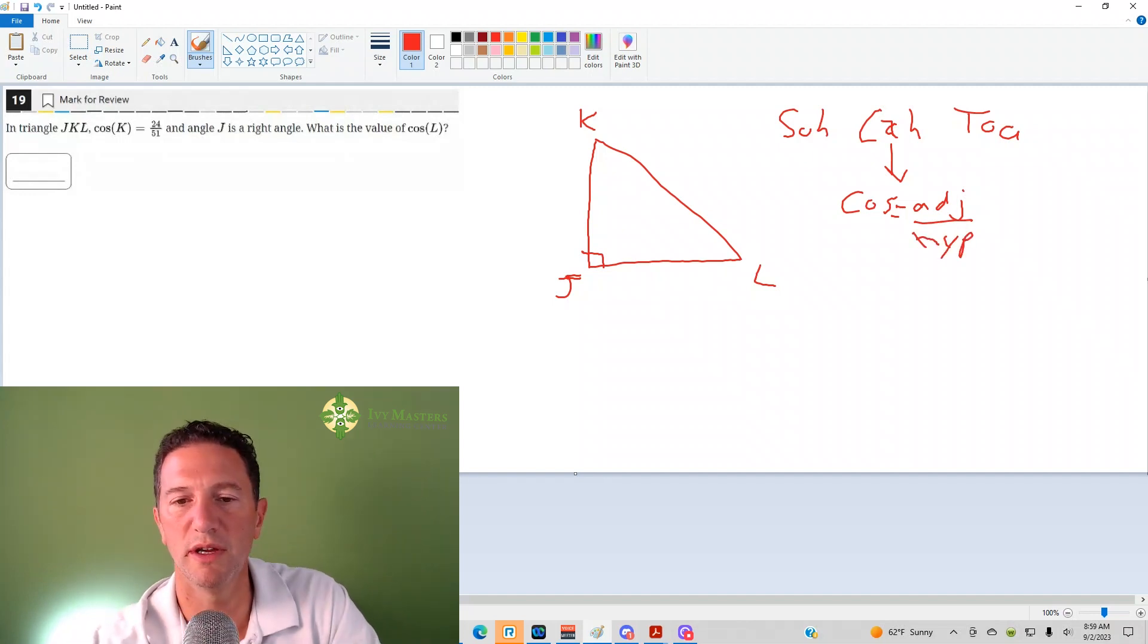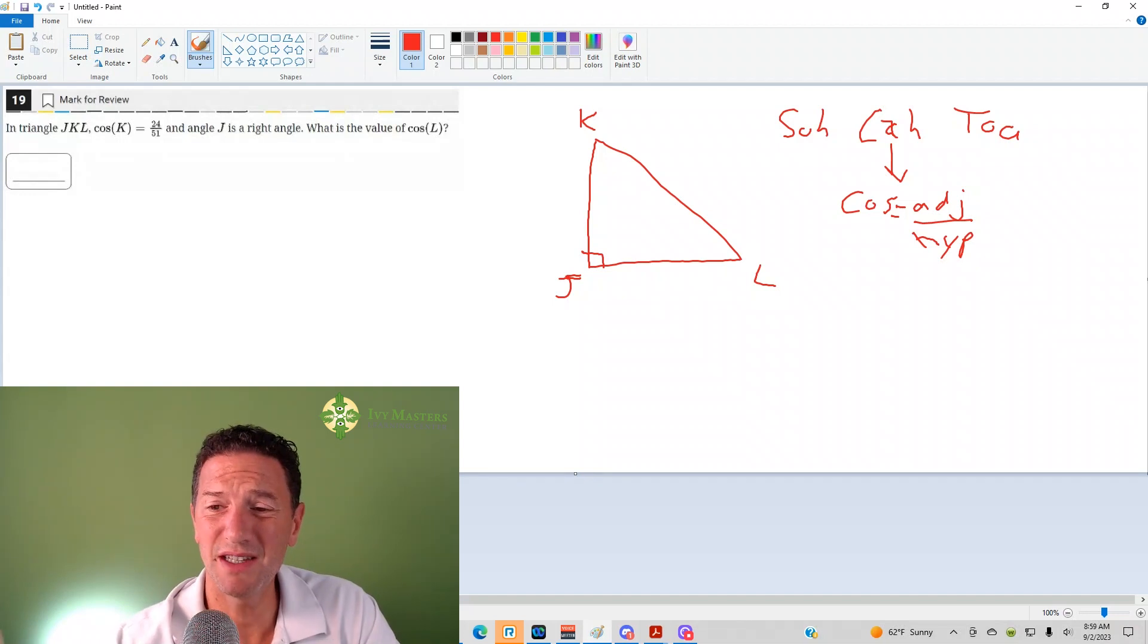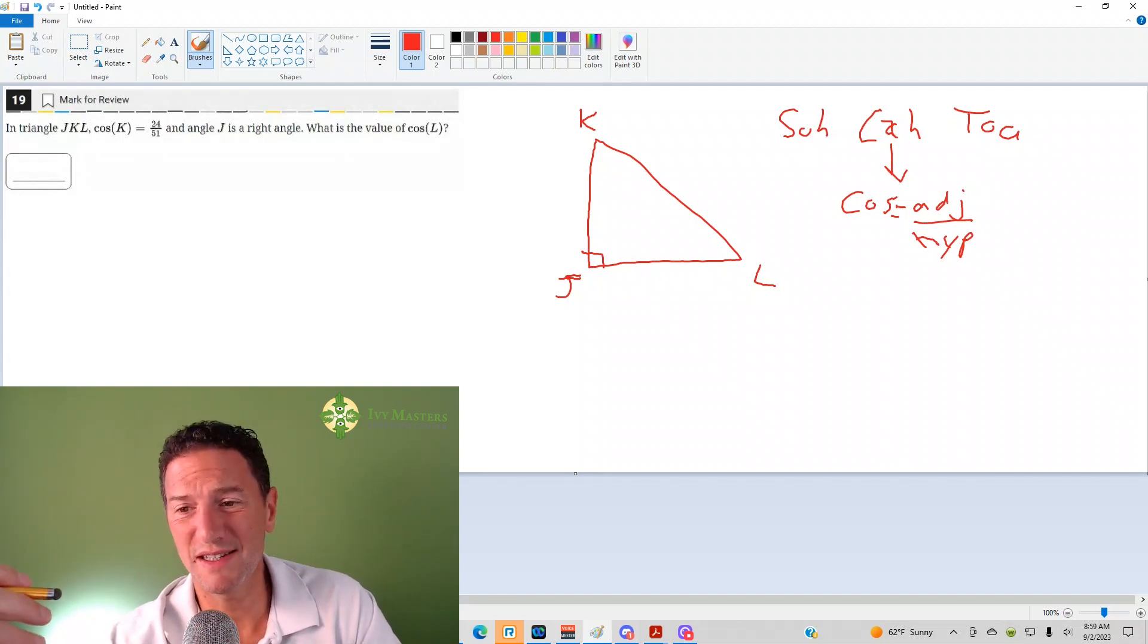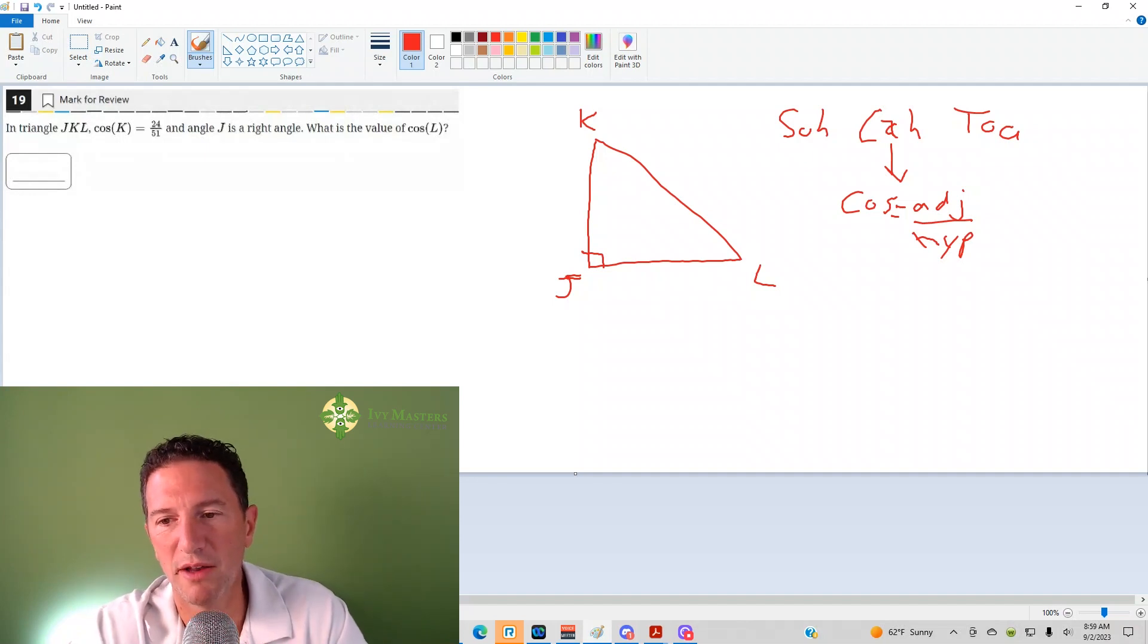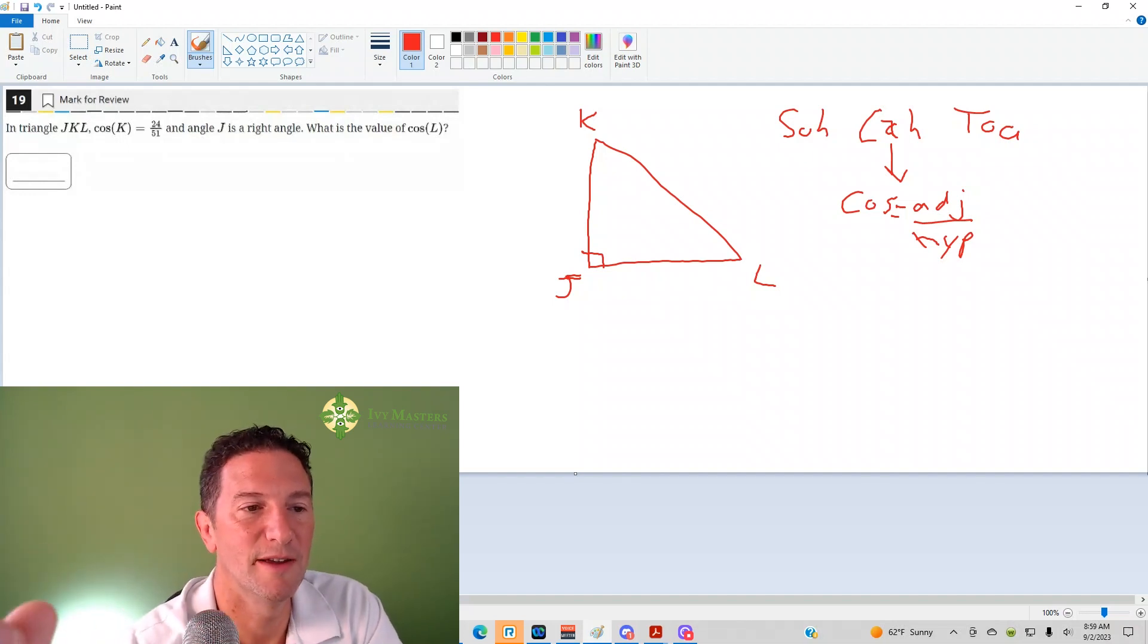Adjacent always is the side right next to, but hypotenuse is always the longest side. So I know the hypotenuse might be right next to our K as well, but hypotenuse is always the longest side. So adjacent in that case is going to be 24, hypotenuse is 51.